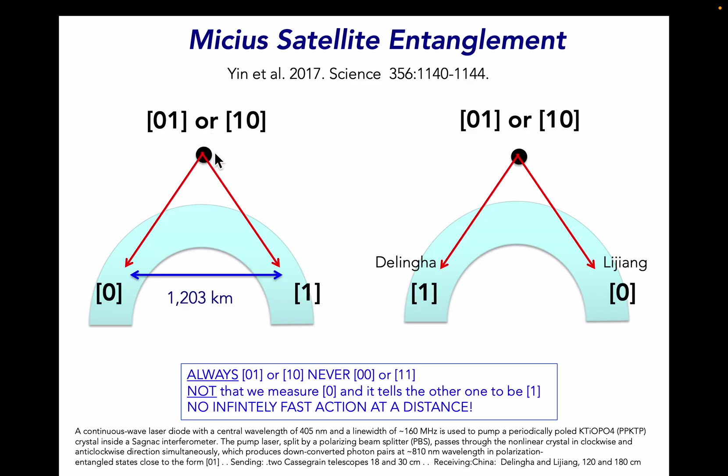A few years ago a Chinese satellite used entanglement to send photons to two different ground stations that were nearly a thousand miles apart. And every time one station reads a 0, the other reads a 1. And when one reads a 1, the other reads a 0. We can't predict where they're going to get a 0 and 1. But somehow by spooky action at distance they communicate together so we never get [1,1] or [0,0].